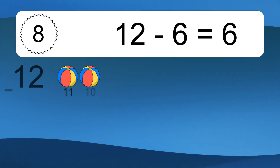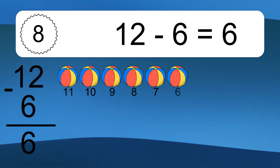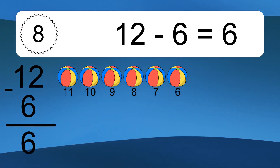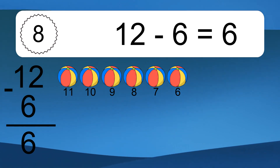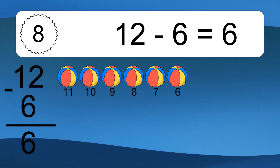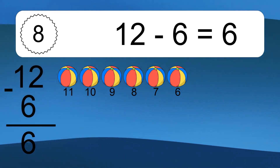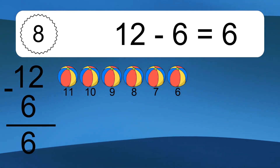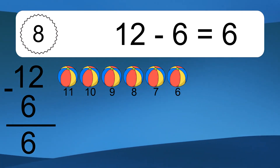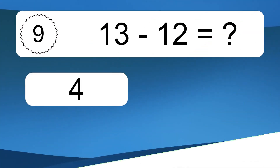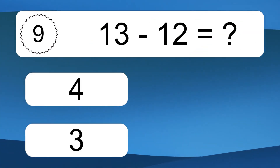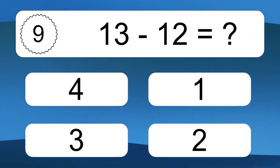12 minus 6 equals what? 12 minus 6 equals 6. Let's count it. 11, 10, 9, 8, 7, 6.